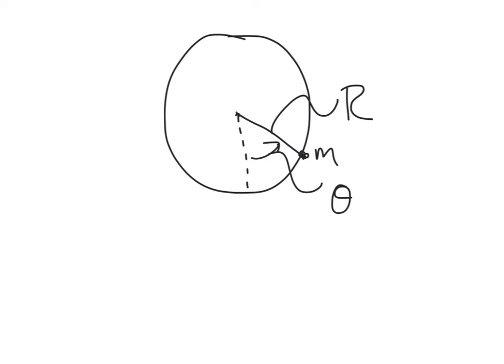One of my favorite examples of the application of the Euler-Lagrange approach to dynamics is to consider a bead on a spinning wire hoop. We have a circular wire hoop with radius R. Here's our little bead, mass m. We're going to refer to its position using the angle theta, measured relative to vertical straight down. The hoop is spinning about a third dimension with angular velocity omega.